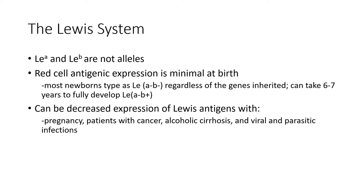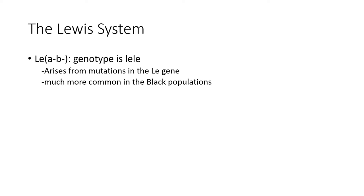Other causes of decreased expression of Lewis antigens are pregnancy, patients with cancer, alcoholic cirrhosis, and viral and parasitic infections. Some pregnant women who are temporarily Lewis A negative, B negative will develop antibodies to the Lewis antigen. These do not harm the fetus because the fetus does not have antigens. The Lewis A negative, B negative genotype is homozygous for the lowercase le gene. This gene arises from the mutation of the capital Lewis gene. This type is much more common in the Black population.